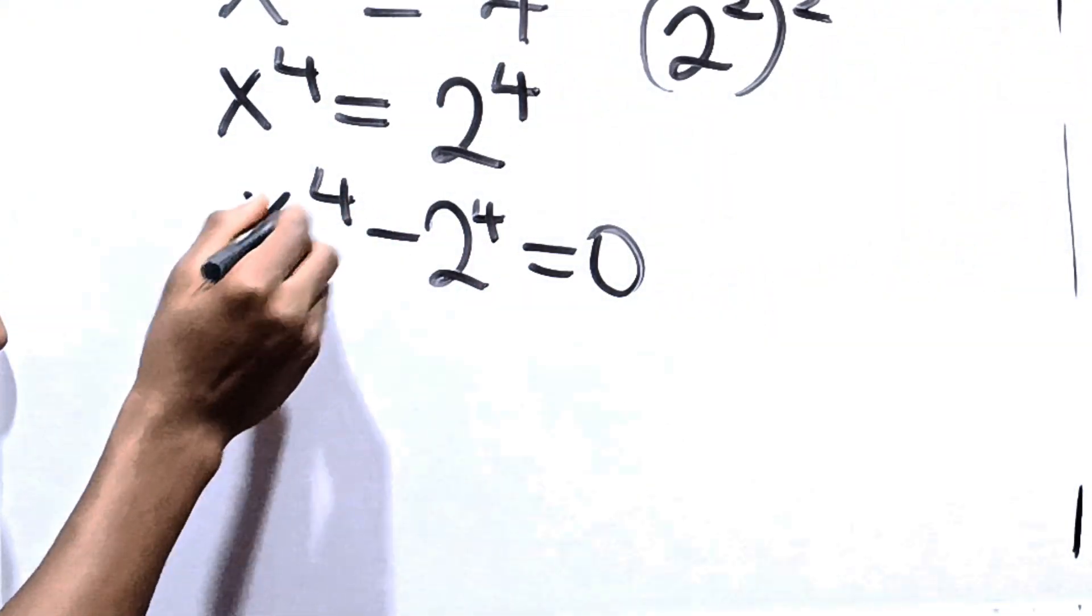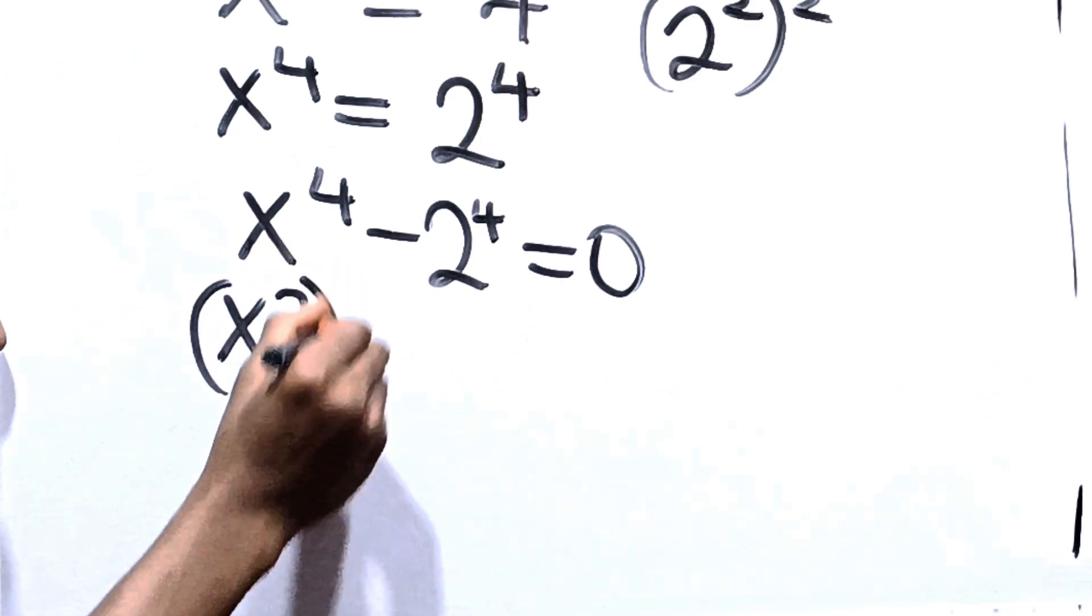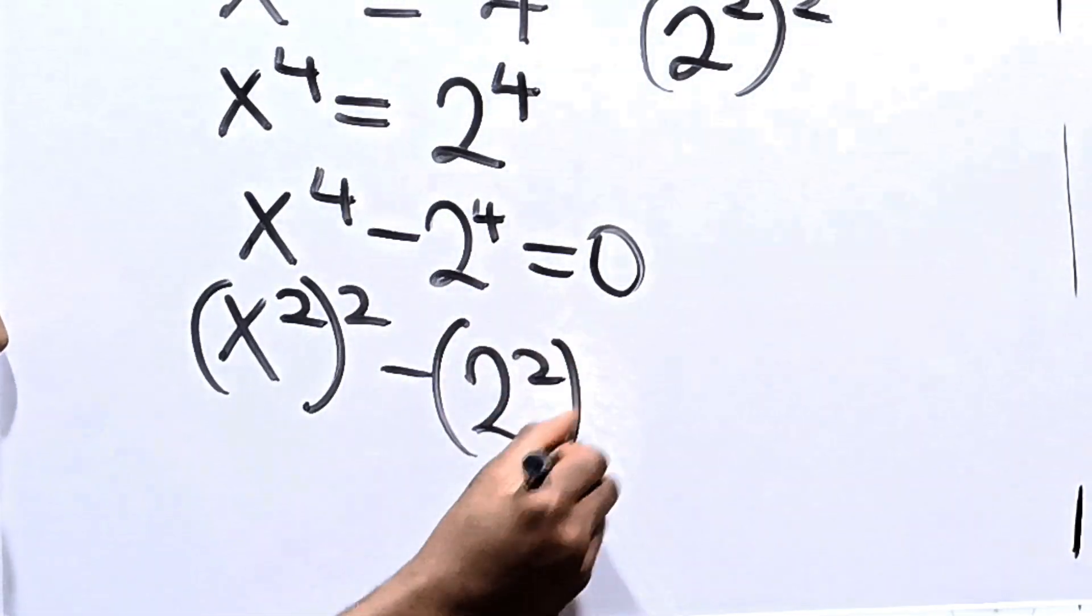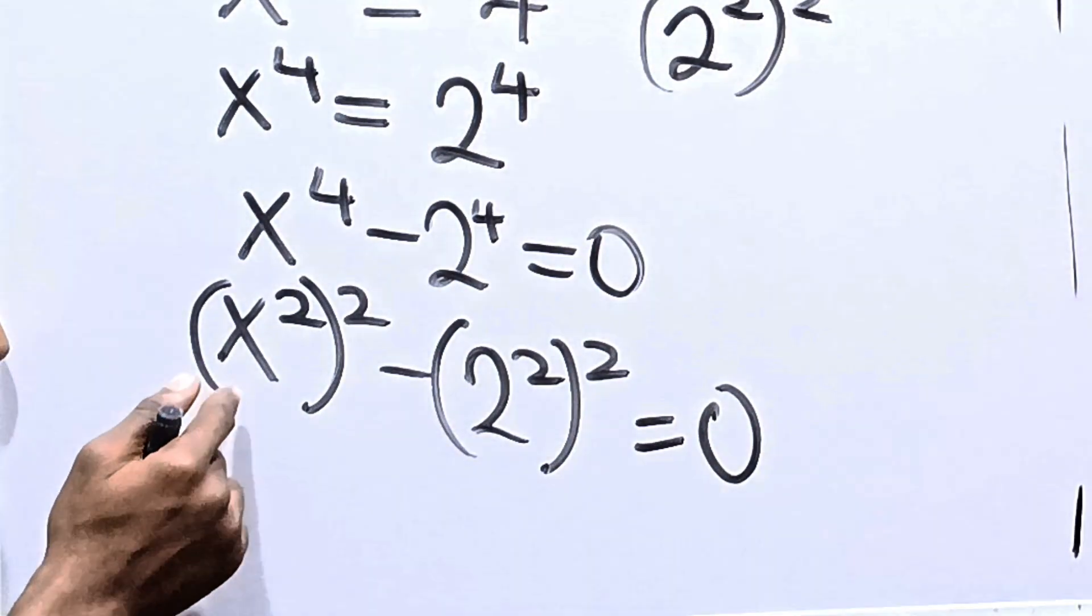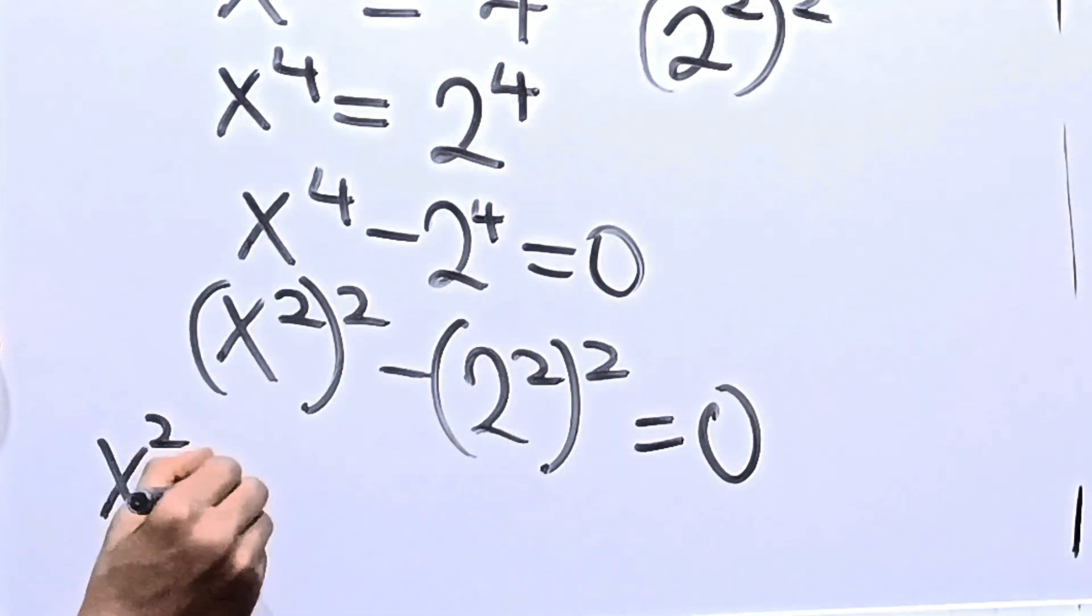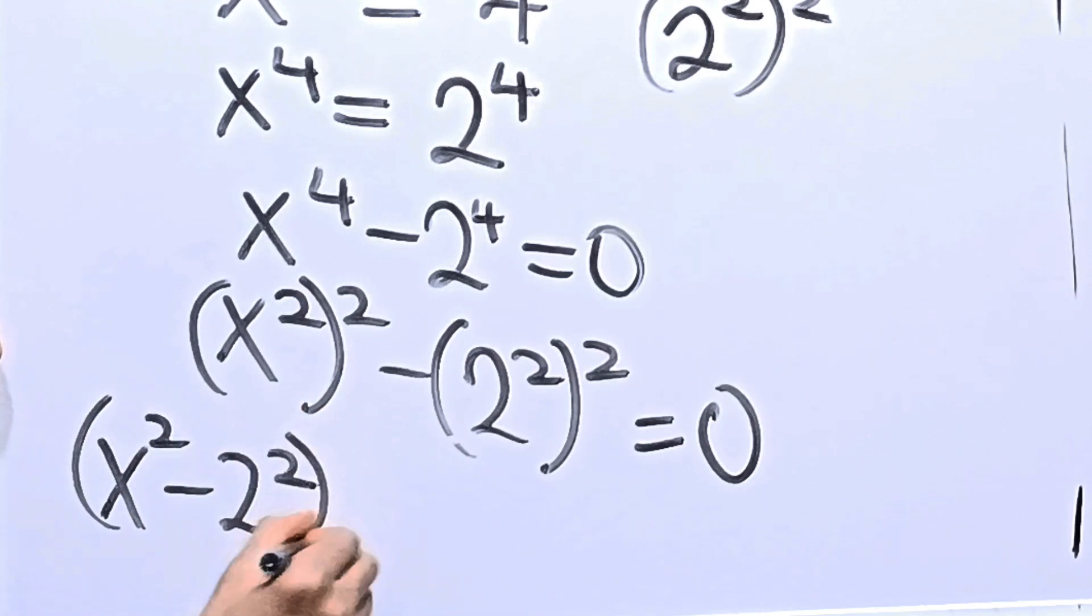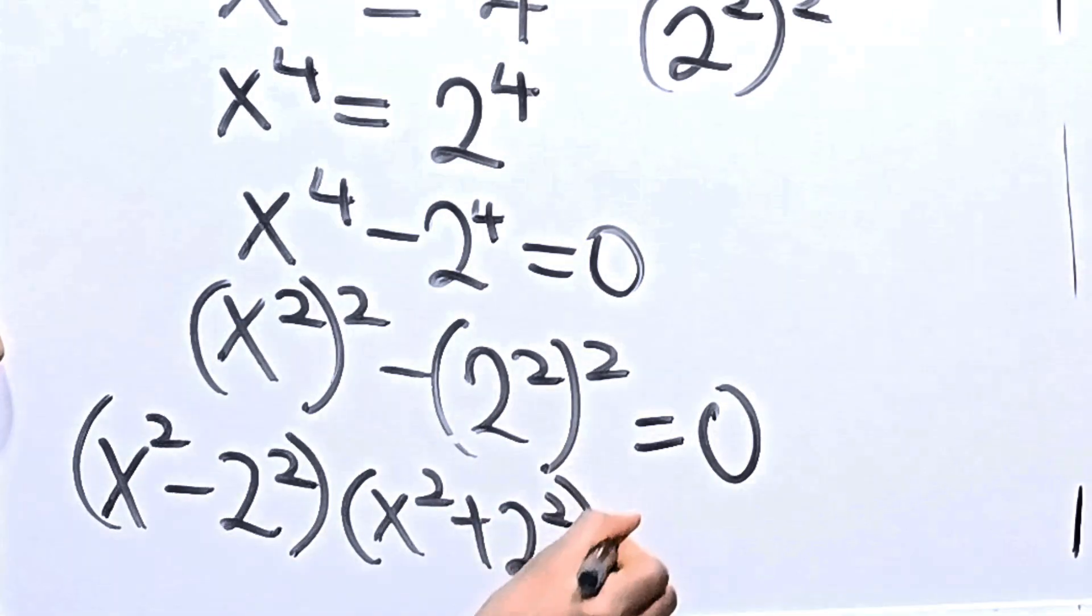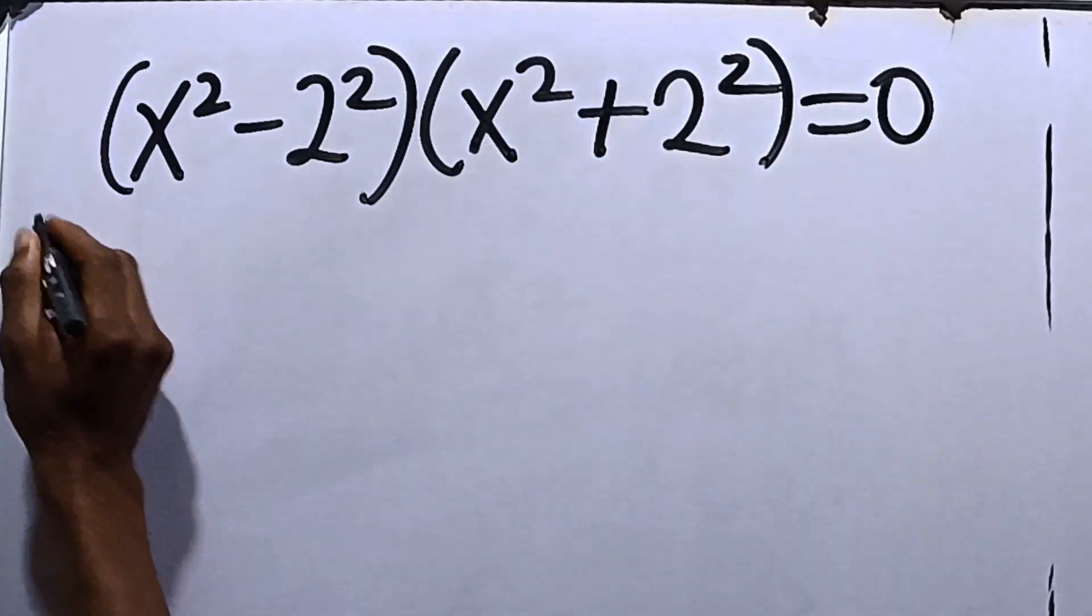So we have, instead of this, we have x raised to the power of 4, so we can write it as x squared squared minus 2 squared squared. So we can say that x squared squared minus 2 squared squared is equal to 0. Let's move it up from here.